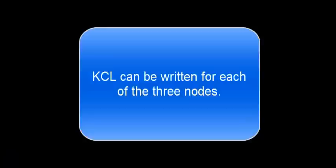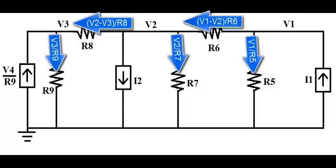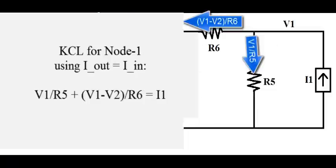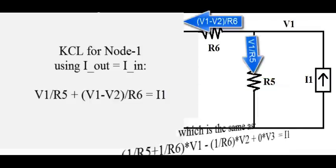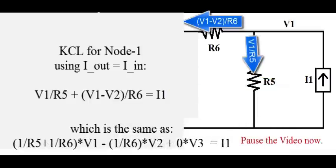Kirchhoff's current law can be written for each of the three nodes. Kirchhoff's current law for node 1 using I out equals I in, which is the same as this version.